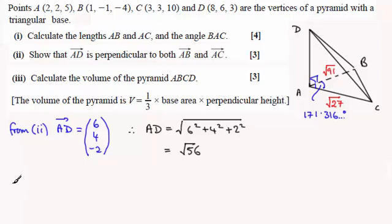Therefore, the volume of ABCD is going to equal one-third times the area of the base.